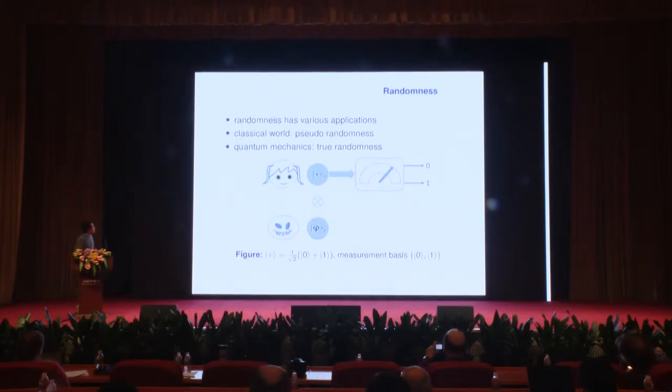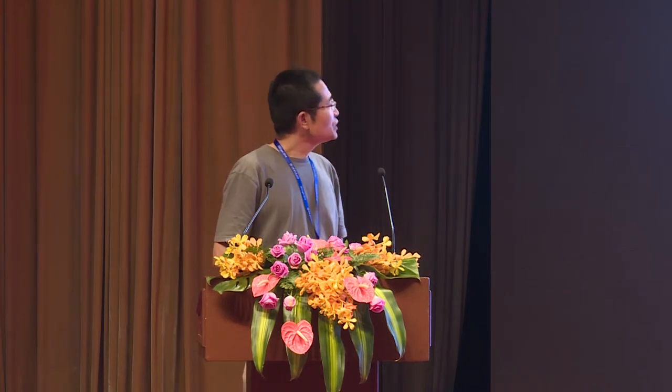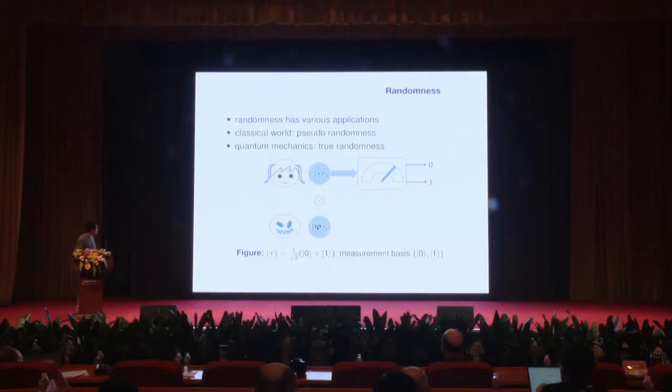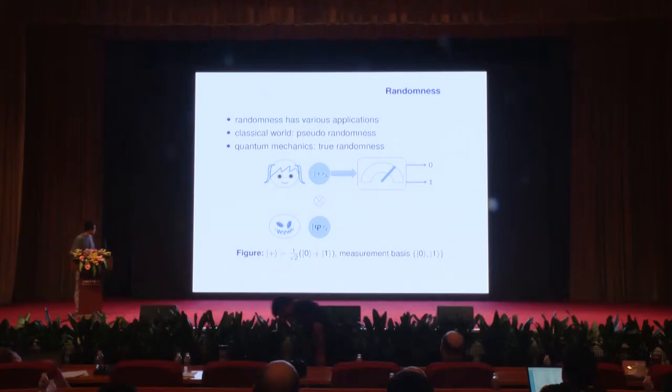Randomness has various applications in many fields. In the classical world, usually only pseudo-randomness is generated because its value is predetermined in advance by a hidden variable. In principle, it is rather easy to generate true randomness in the quantum framework. For example, Alice can perform a measurement of the plus state in the basis of 0 and 1, and the outcome is totally random and even private to the adversary.